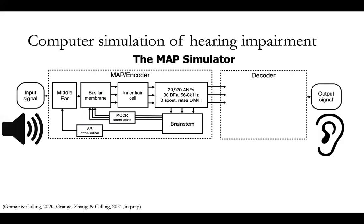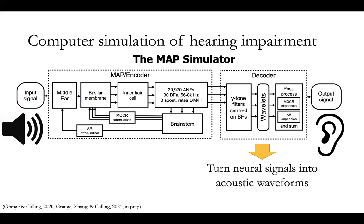In the decoder bit, we converted the neural signals from the auditory nerves into acoustic waveforms using a bank of gamma tone wavelets and some processing expansions. In this way, we can present the waveforms to normal hearing listeners and evaluate the perceptual impact of cochlear synaptopathy in psychophysical tasks.